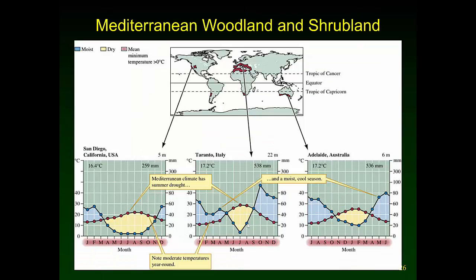Looking at the climate diagrams, temperatures are consistently above freezing all year round — nice moderate temperatures with warmer summers. There's a summer drought, so it's warm and dry in summer and cooler and moist in winter. Looking at Australia, the climate diagram starts in July, with summer arriving in November through March, showing the same pattern of summer drought and winter rains.